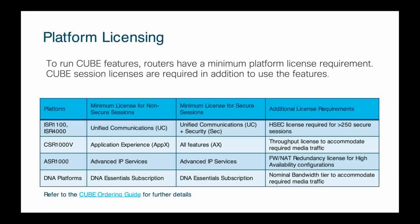First, ISRs. You need the Unified Communications feature license on the box no matter what. If you add security — which will be SIP TLS and that type of thing — you do need the security license as well, so a VSEC router or something of that sort. If you go above 250 secure sessions, you also need to add the HSEC license, which is higher throughput with encryption, so definitely keep that in mind.